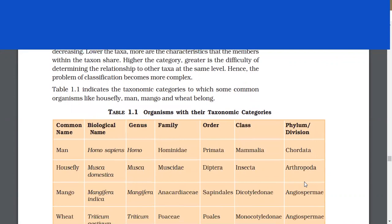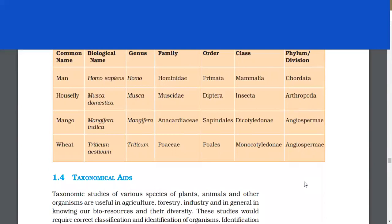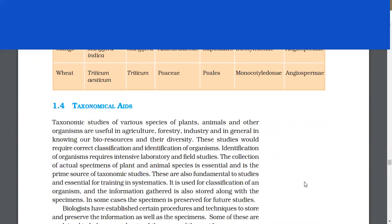Table 1.1 indicates the taxonomic categories to which some common organisms like housefly, man, mango, and wheat belong. Taxonomic studies of various species of plants, animals, and other organisms are useful in agriculture, forestry, industry, and in general in knowing our bioresources and their diversity.